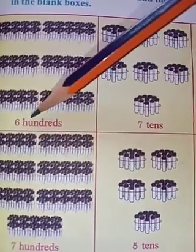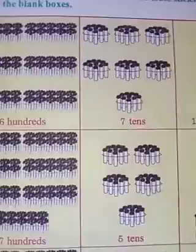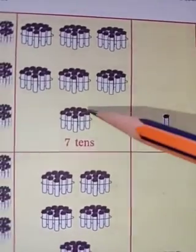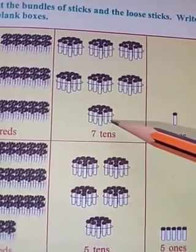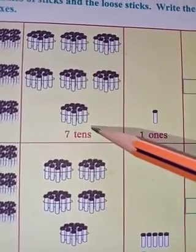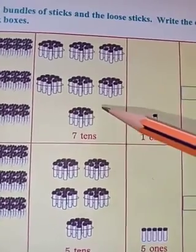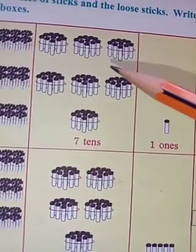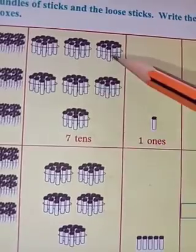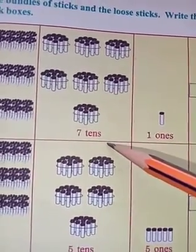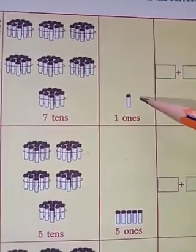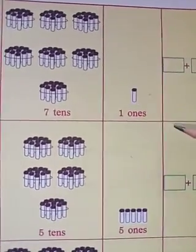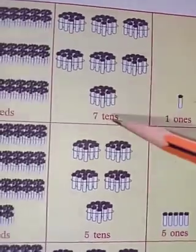Each one bundle means how many sticks? Ten sticks only. How many groups are having here? One, two, three, four, five, six, seven — seven tens. Only one loose stick is there, so one ones. Ones spelling: O-N-E-S. Tens spelling: T-E-N-S. So children, write the number: six hundreds, seven tens, one ones.